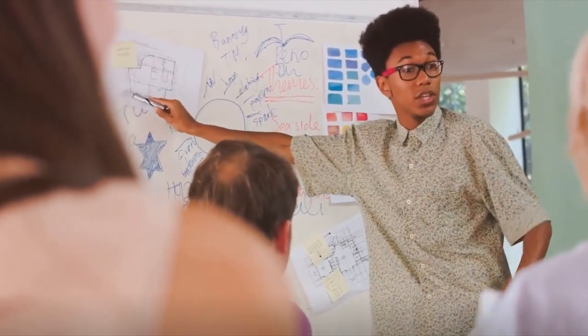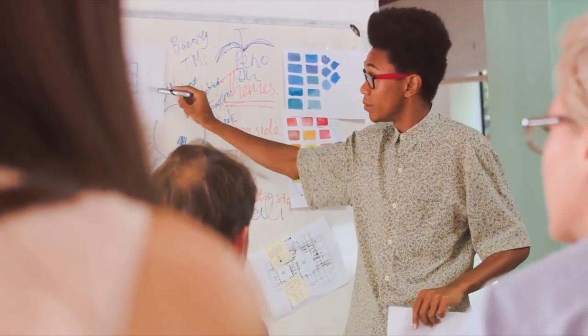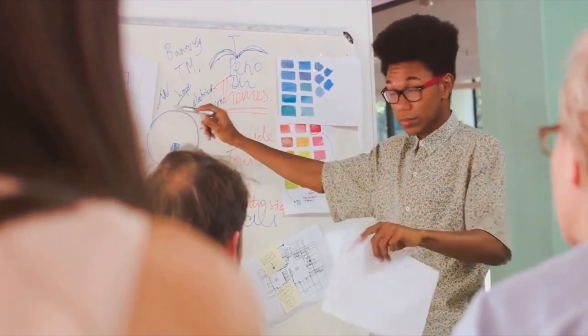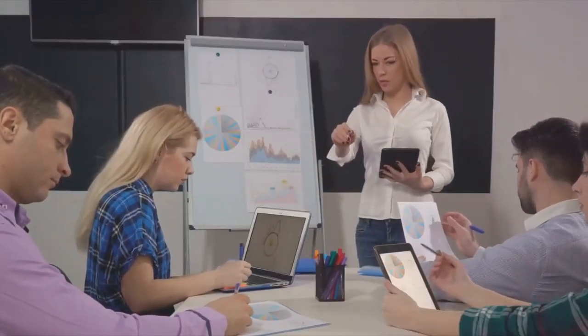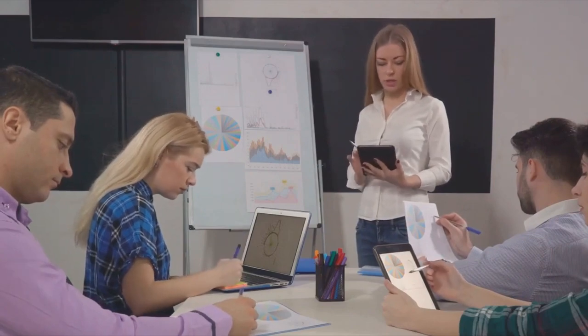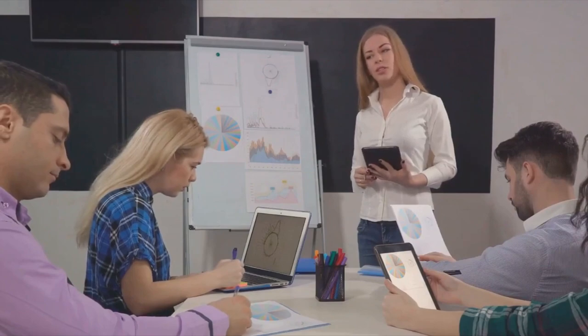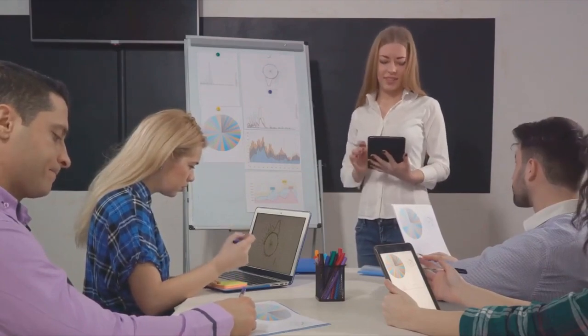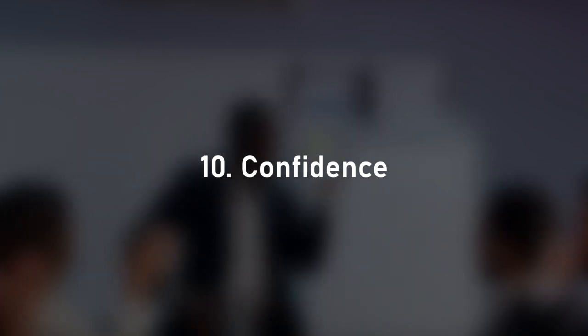So to sum it all up, to be an effective leader, you need to inspire your team, hold yourself accountable, and adapt to changes. These three principles when practiced consistently, can transform any individual into a leader who commands respect and drives results. So an inspiring, accountable, and adaptable leader is what every team needs.